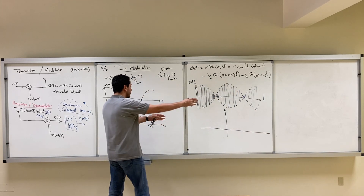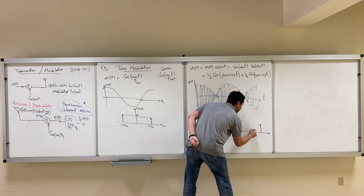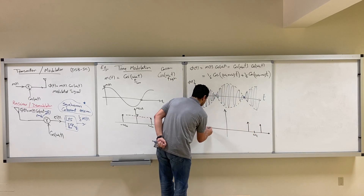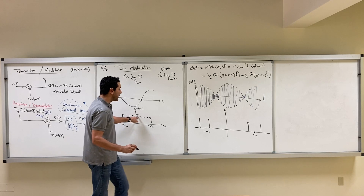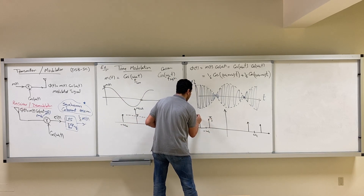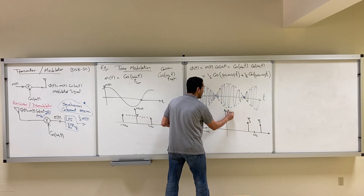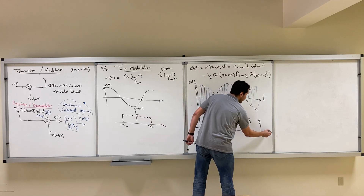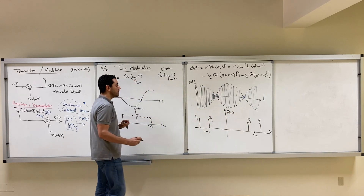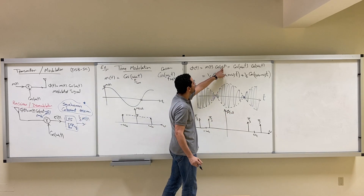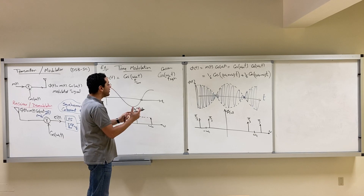The spectrum of M is shifted to the right around omega_C and to the left around negative omega_C. Since the original area is pi, after dividing by two we get pi over two at each delta. You shift by the frequency of the cosine, which is omega_C, to positive and negative omega_C. This is how our signals look in the time domain and frequency domain.